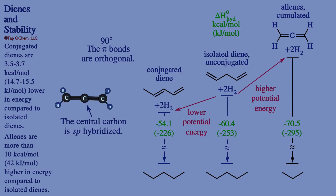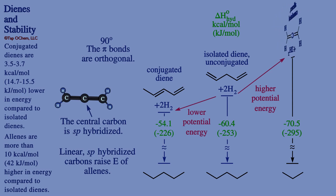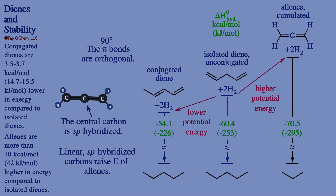This is a general trend and extends to alkynes, which also have sp-hybridized carbons with similar heats of hydrogenation. In summary: conjugated dienes have pi bonds adjacent to each other where electrons can delocalize across the pi bonds, making them lower in energy than isolated dienes. The average stabilization for conjugated dienes compared to isolated dienes is in the range of 3.5 to 3.7 kilocalories per mole. Allenes have an sp-hybridized central carbon, their two pi bonds are orthogonal, and their increase in energy is consistent with alkynes that also have sp-hybridized carbons.